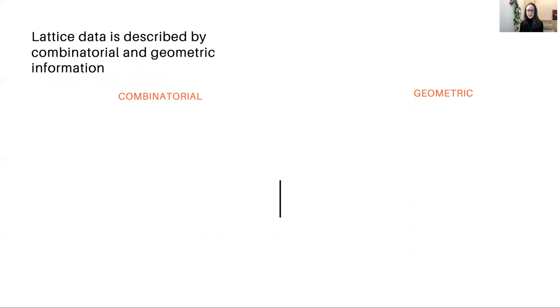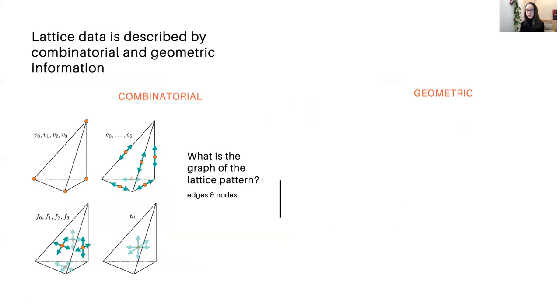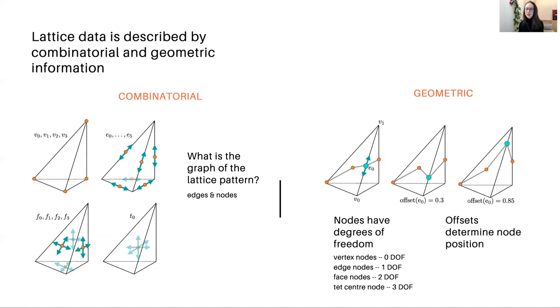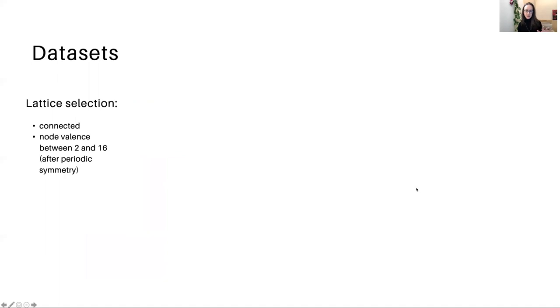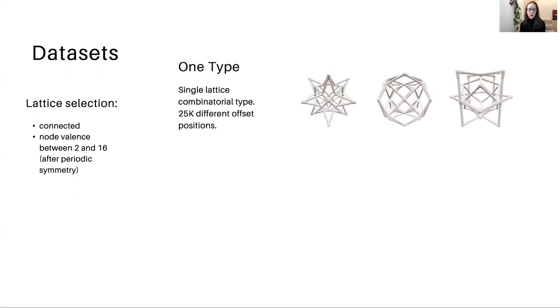Like many problems in discrete geometry, lattice data is described by both combinatorial and geometric information. On the combinatorial side, we're asking the question, what is the graph of that lattice pattern, that smallest unit that gives us the recipe for the whole lattice? What nodes and edges are present? On the geometric side, we're asking, where are the nodes? And this determines where the edges are. Of course, the nodes will have degrees of freedom depending where they're placed, and we capture this by describing their position using offsets. This is a coordinate-free way of describing them relative to the coordinates of the pattern tetrahedron. Using this approach, we created a number of data sets. I won't describe them all, but the details are in the paper. We did have some basic criteria that were met by every lattice in our data set, namely that they were connected, and we placed some restrictions on node valence to make sure we didn't have any dangling edges, and our graphs didn't become too dense.